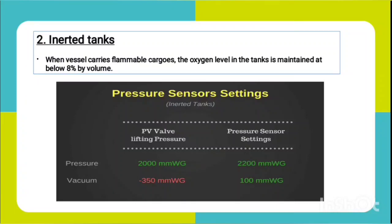For inerted tanks - when a vessel carries flammable cargo, the oxygen level in the tanks is maintained below 8% by volume using inert gas. When loading, the tank will be under positive pressure and excess pressure will be vented either through the mastermizer or through the PV valves. When discharging, we cannot let the vacuum side of the PV valve lift; we supply inert gas to keep tanks under positive pressure, otherwise air entering would increase oxygen percentage and could form an explosive mixture.